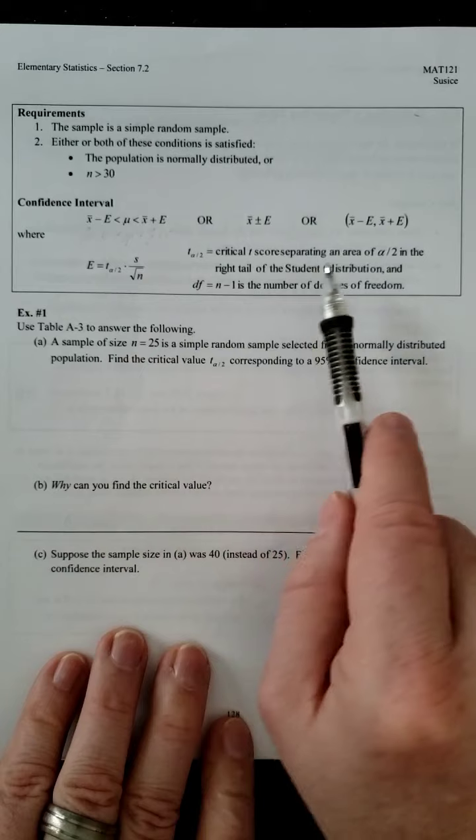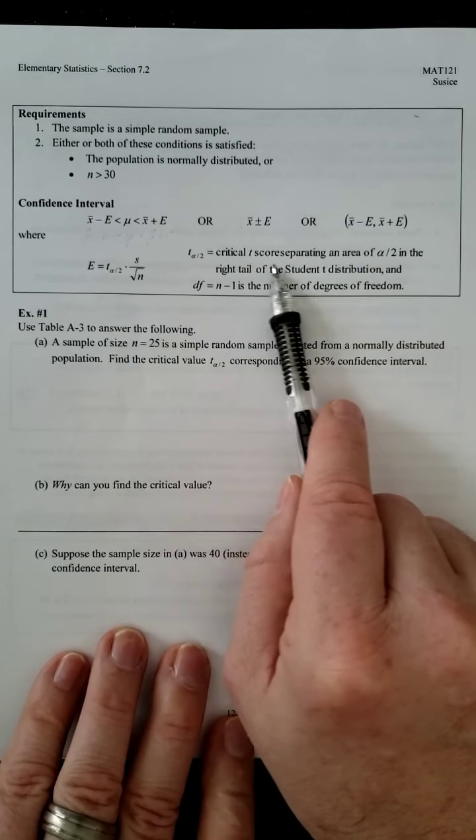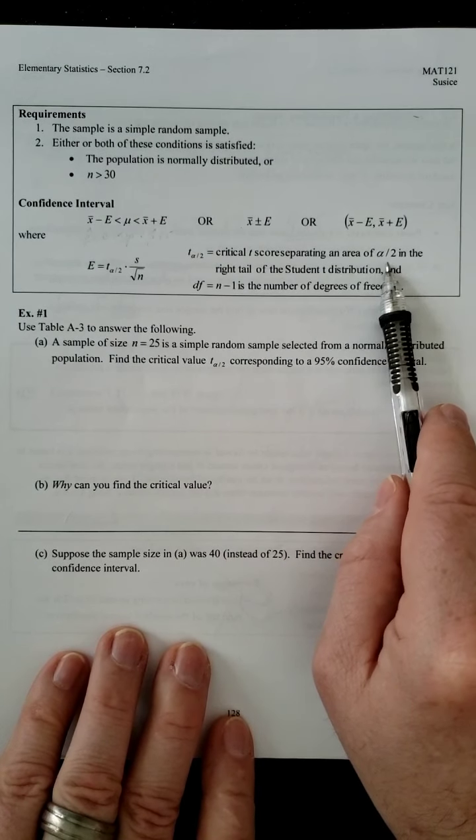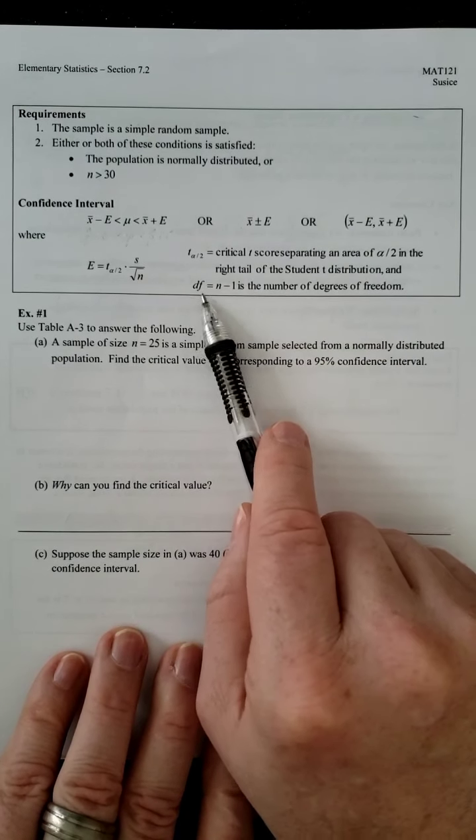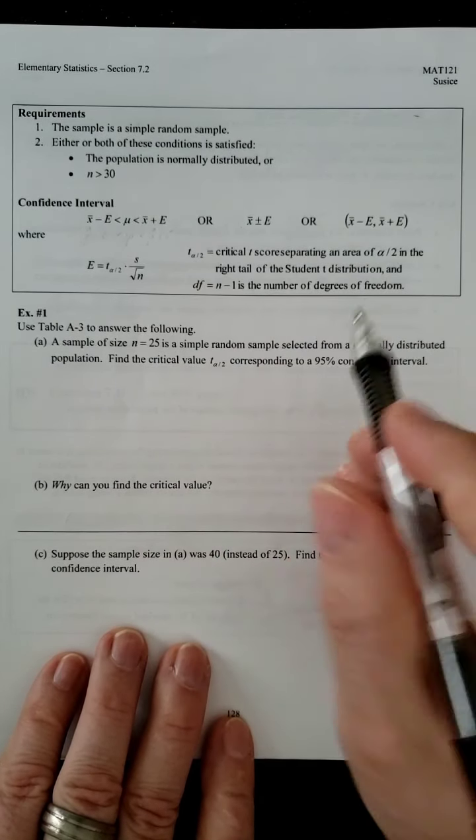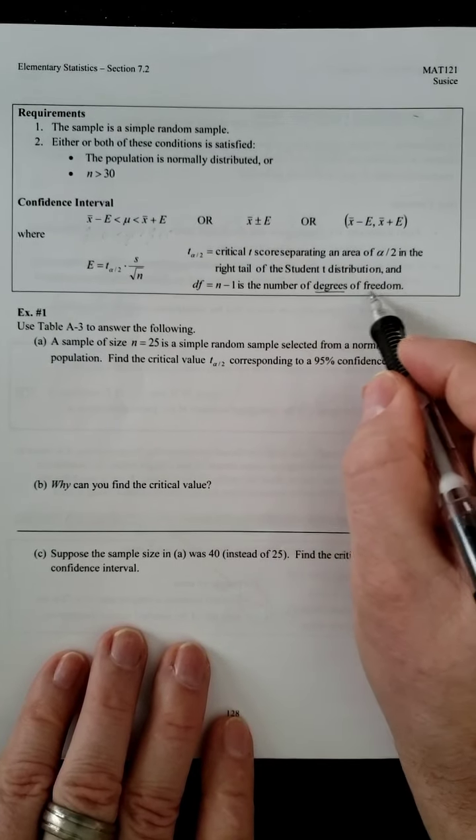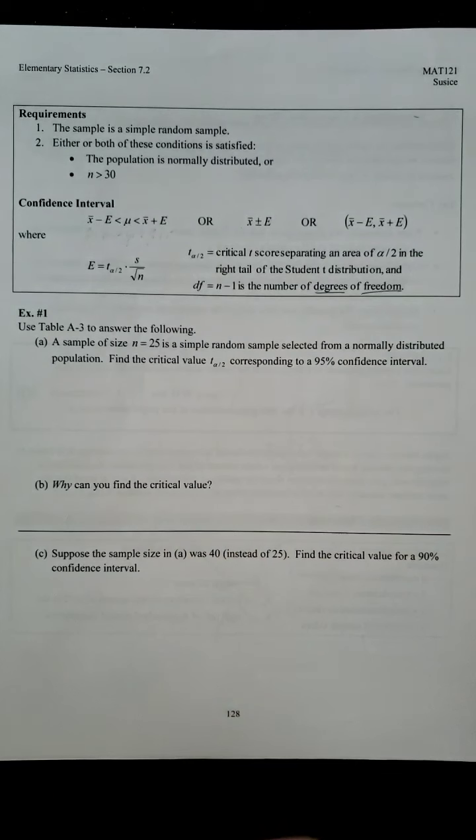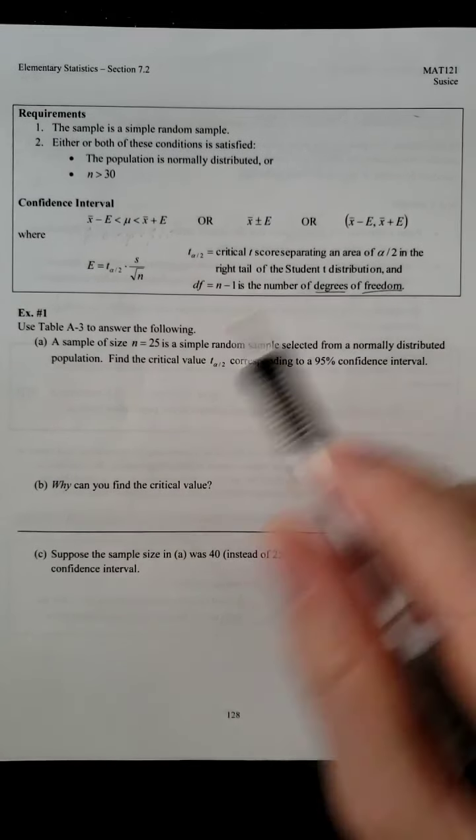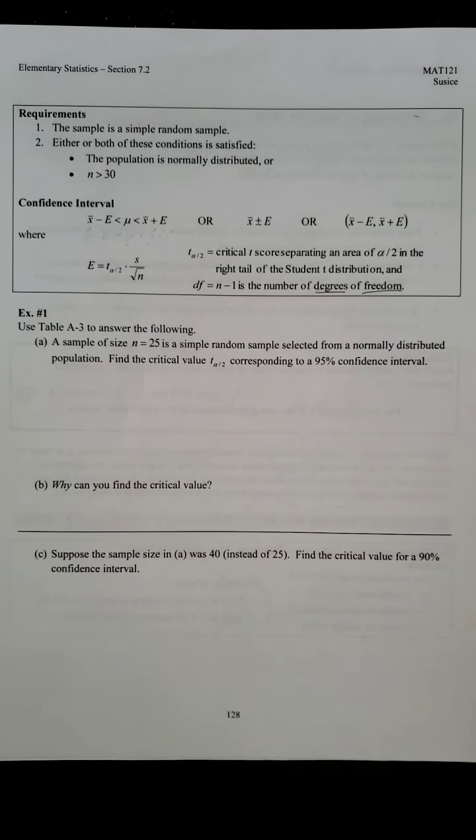is where it's a little bit trickier. So the T score is the critical T score separating an area of alpha over 2 in the right tail of the student T distribution. And DF, which stands for degrees of freedom, is equal to N minus 1. How they determine that, I don't even know. But it's just the formula. And that's the way we have to use it. Okay, so let's see what this whole T score stuff is all about.